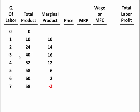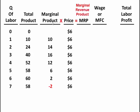So how many workers would you hire? You'd probably say three workers because that's where the marginal product is the greatest. But the answer is you don't know — you don't know unless you know the price of the product and the wage rate of each worker. Let's say this is a perfectly competitive market and the price of the product is $6. For each unit sold it goes for $6. To figure out the marginal revenue product, you take the marginal product and multiply it times the price.